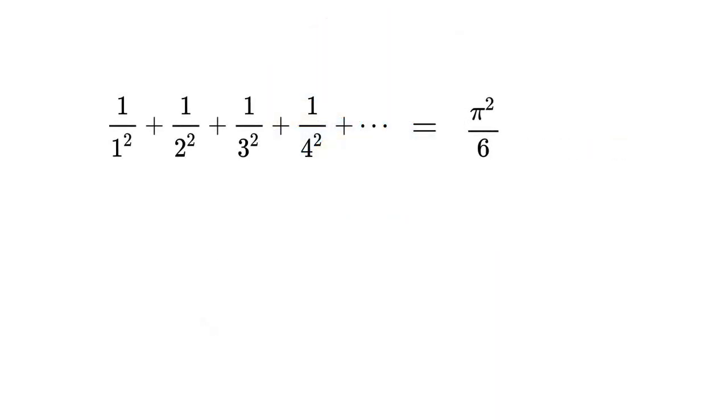the series 1 over 1 squared, plus 1 over 2 squared, plus 1 over 3 squared, plus 1 over 4 squared, and so on, which equals 1 plus 1 over 4, plus 1 over 9, plus 1 over 16, etc., gets closer and closer to the value pi squared over 6, as we include more and more terms.